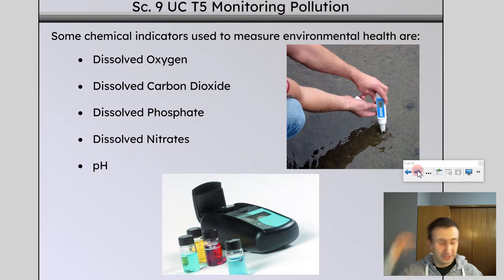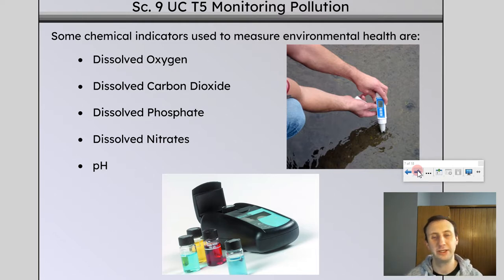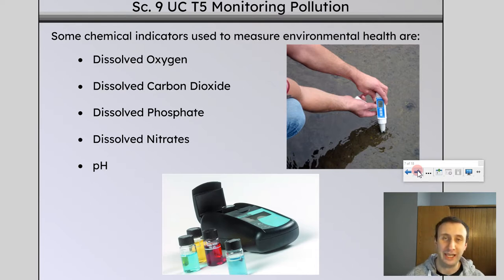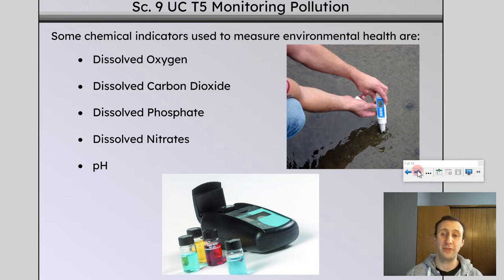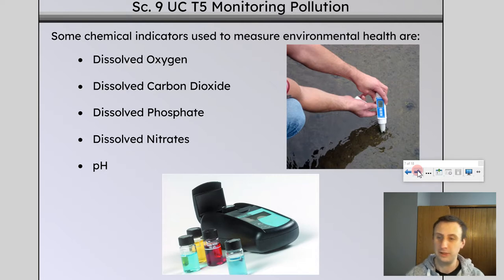pH is another important one. We learned how important pH is to aquatic ecosystems — as we go to a lower pH, more acidic, that causes problems for reproduction for things like fish. pH can easily be measured either with universal pH indicator paper or by using a pH probe.